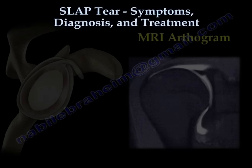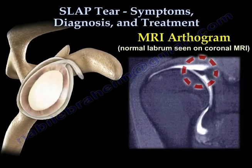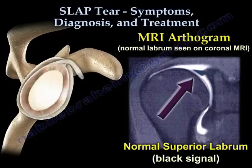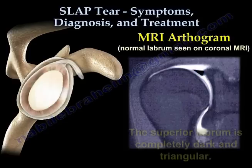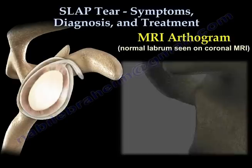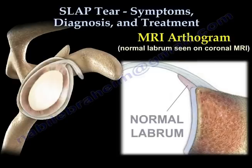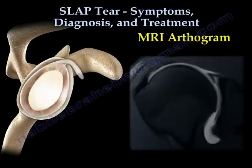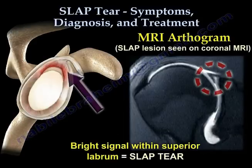MRI arthrogram: The normal labrum is seen on the coronal MRI. The normal superior labrum is shown by a black signal — it is completely dark and triangular. The bright signal within the superior labrum is the sign of a slap tear.